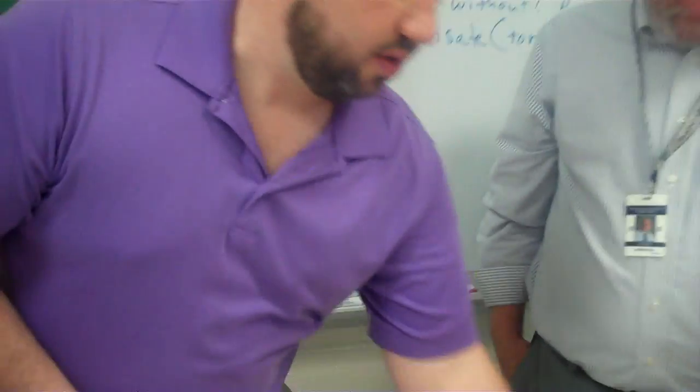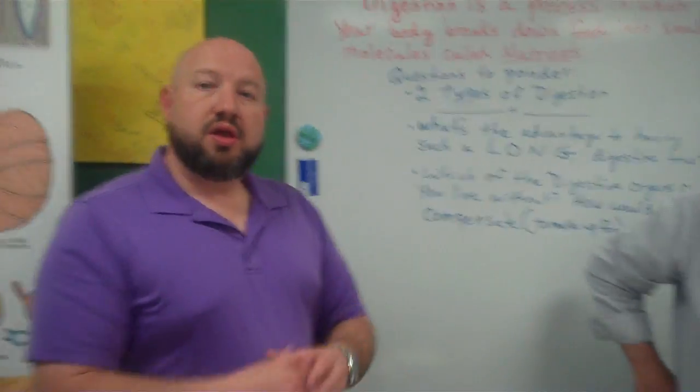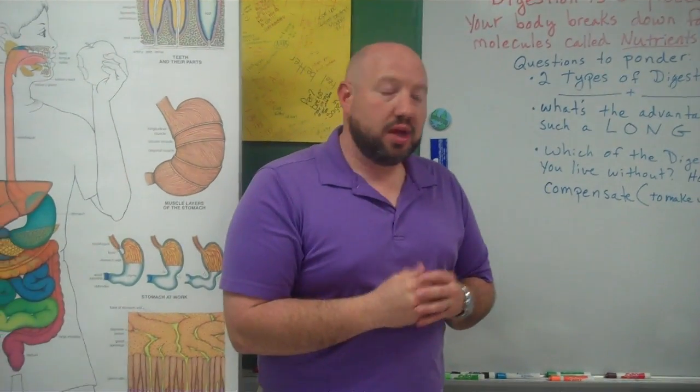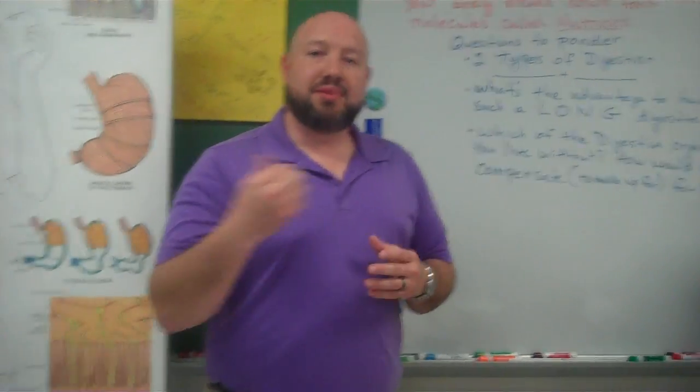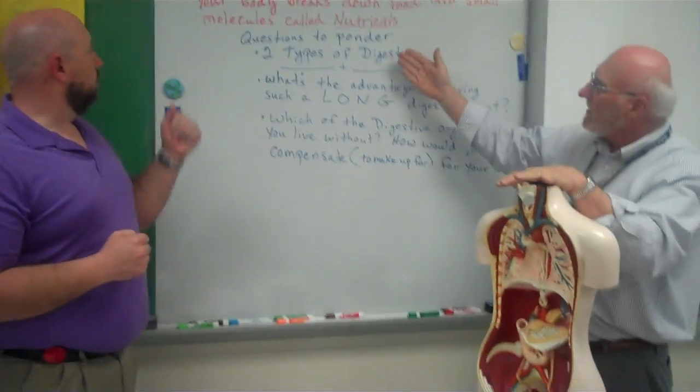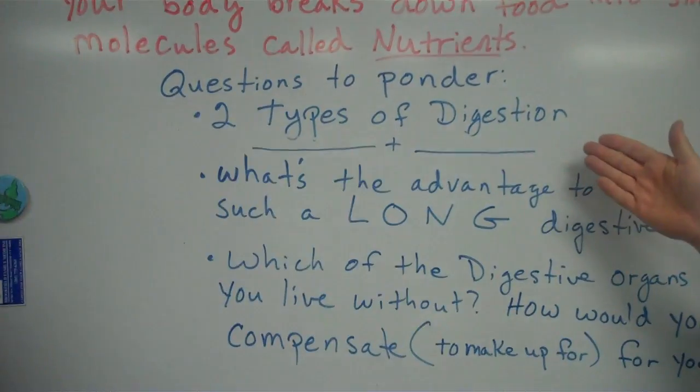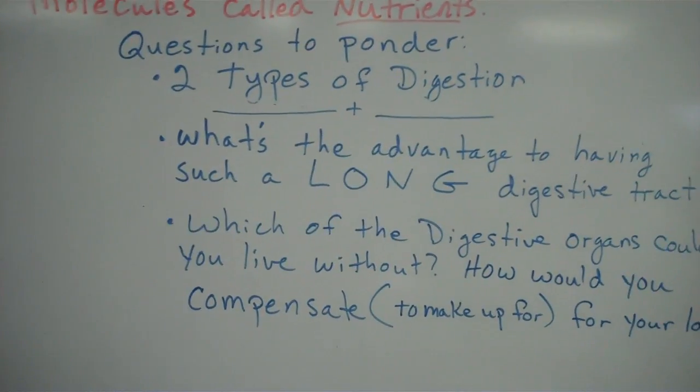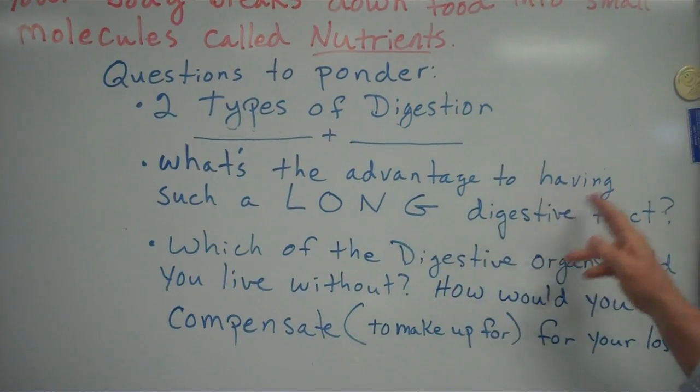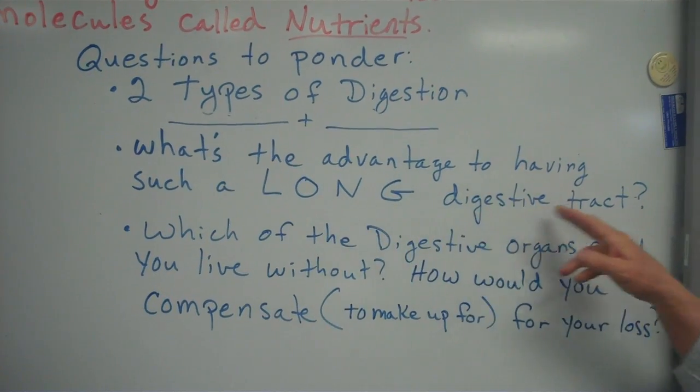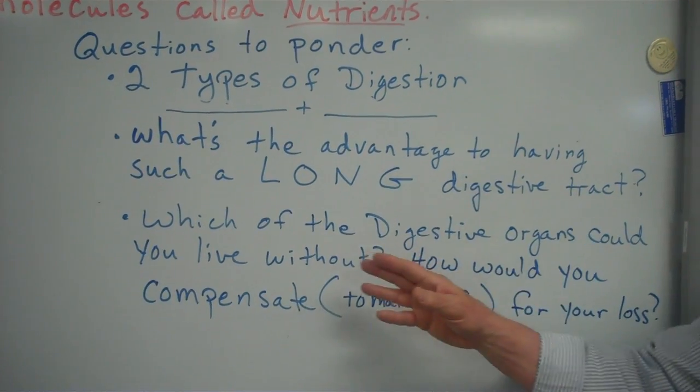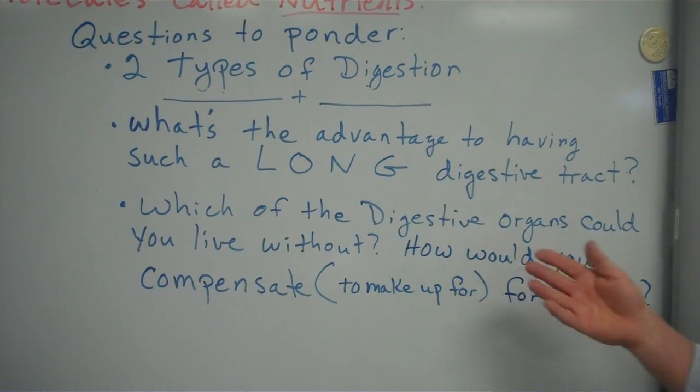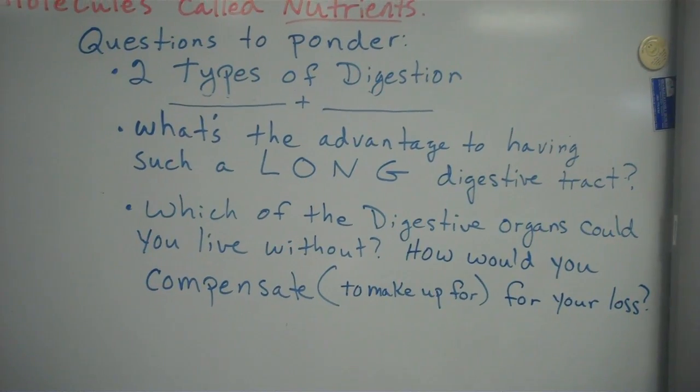And again, those are the different parts of the digestive system, different functions. But more importantly, understand what food passes through and the parts of the digestive system that food does not pass through but still play an integral role in digestion. And so these are questions we would like you to ponder and we're going to be asking you the answers to this later on in this unit. What are the two types of digestion? What's the advantage to having such a long digestive tract? And which of the digestive organs could you live without? How would you compensate, which means to make up for, for your loss?